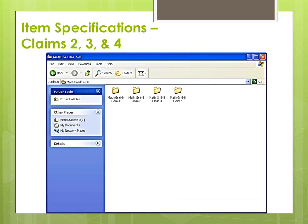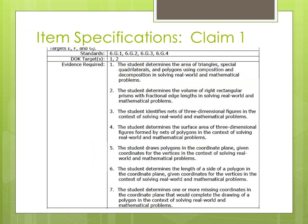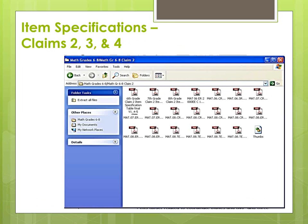So what about claims two, three, and four? Let's go back to the folders for each claim and go into claim two this time. Instead of breaking down the claim into assessment targets as in claim one, the item specifications encompass all assessment targets under claims two, three, and four. As in claim one, the general grade level item specifications are the first three files, and the remaining are sample item types. What is great about these sample items is that you have all the specific information about the domain they're from, the associated assessment targets, depth of knowledge, mathematical practices, etc. The item specifications are provided for each individual item.